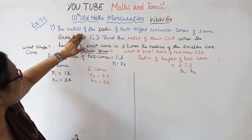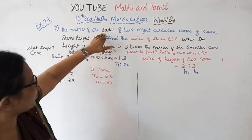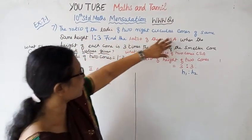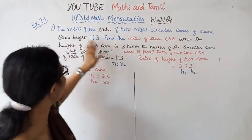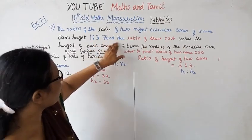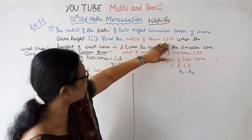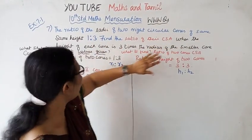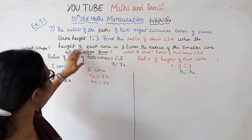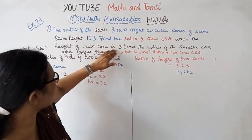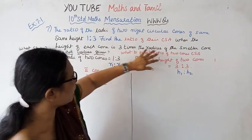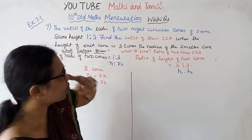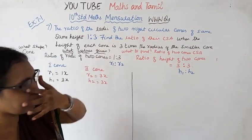The ratio of the radius of 2 right circular cones of the same height is 1 is to 3. Find the ratio of the CSA when the height of each cone is 3 times the radius of the smaller cone.